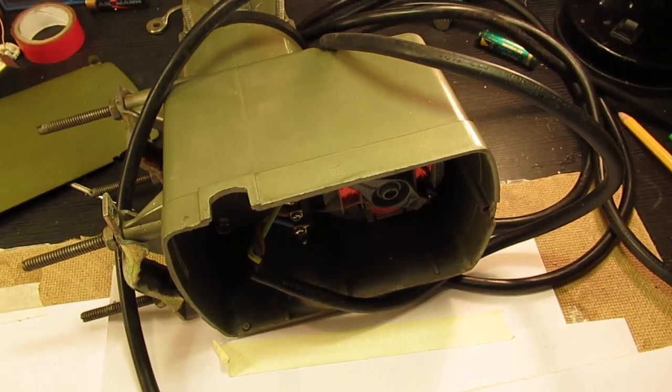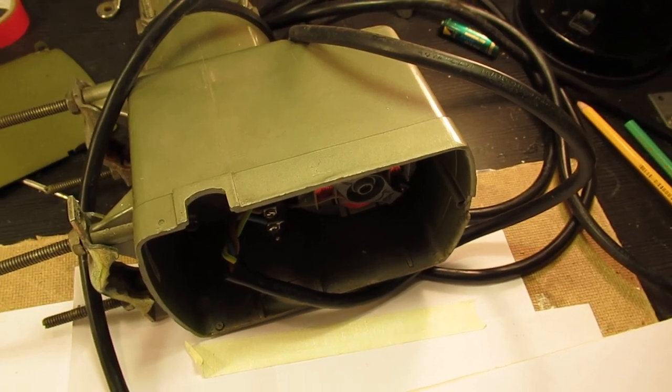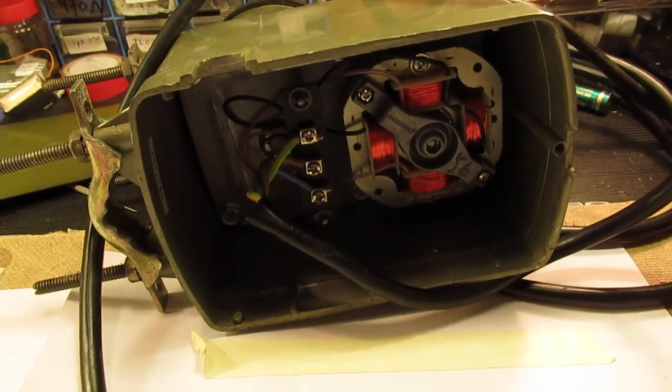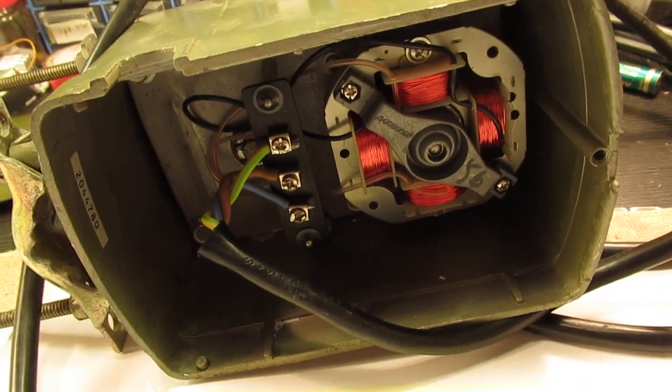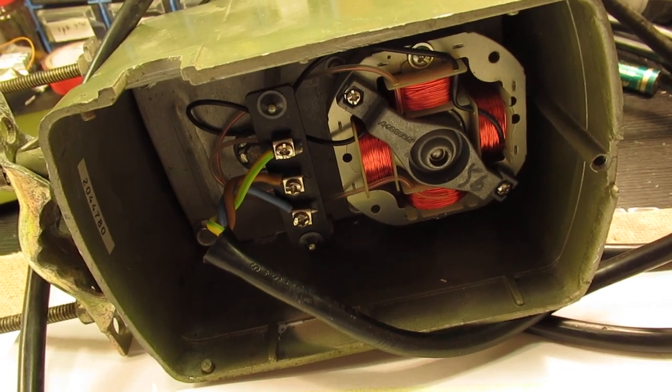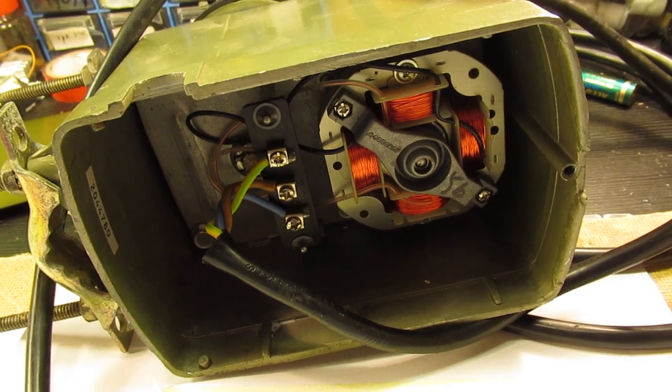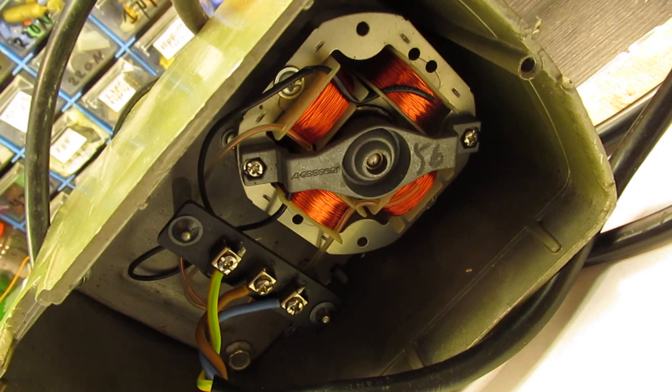This is the Channel Master 9520 antenna rotor and I had to get it working again. I didn't have the box with the controller in it, but I wanted to know how it worked and whether I could get that motor working again.